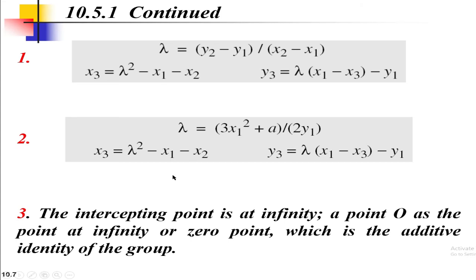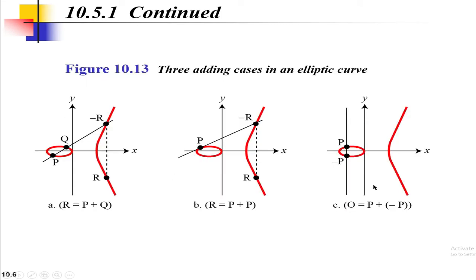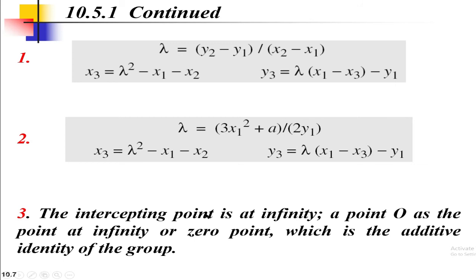The third case involves two points that are additive inverses of each other: P and −P. Point P has coordinates (x₁, y₁) and −P has coordinates (x₁, −y₁). The line connecting these two points does not intercept the curve at a third point — it is believed the intercept is at infinity. This is defined as O, the point at infinity or zero point. These are the three adding cases in elliptic curve cryptography.